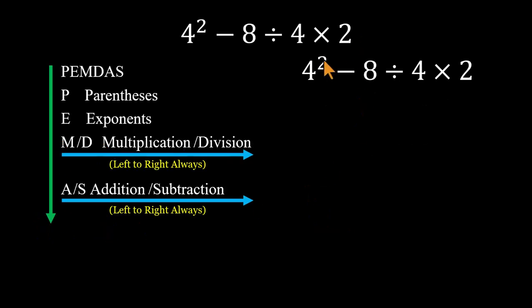They start with the exponent. 4 squared is 16. Then 16 minus 8 equals 8. 8 divided by 4 equals 2. And 2 times 2 equals 4. And that's wrong, too.